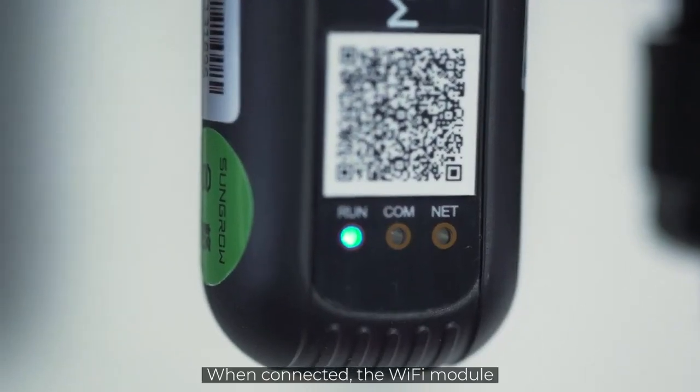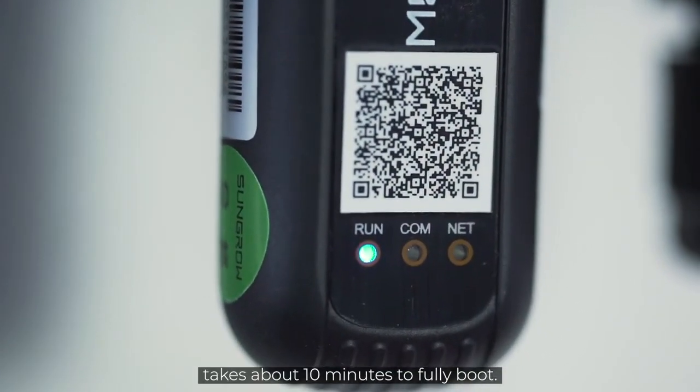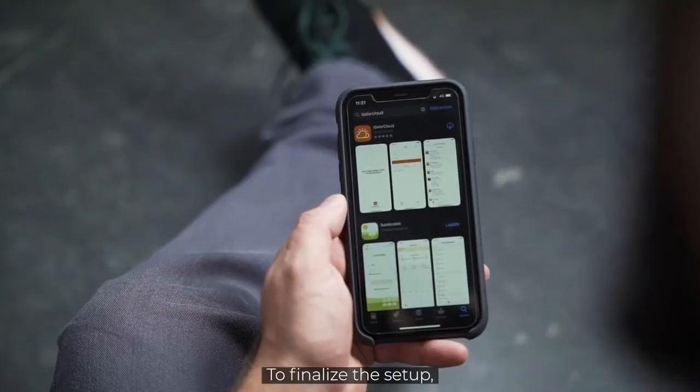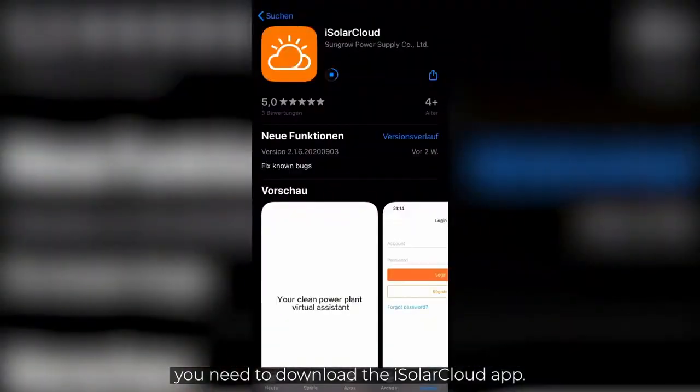When connected, the Wi-Fi module takes about 10 minutes to fully boot. To finalize the setup, you need to download the iSolarCloud app.